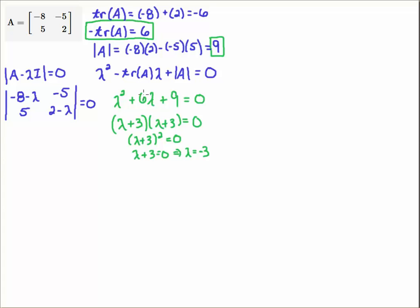Here I grabbed, notice the 6, which is minus the trace. The trace was minus 6, minus the trace was positive 6. And then the determinant of this matrix is 9. And if you actually work through the determinant and simplified everything, you'd get the same result.